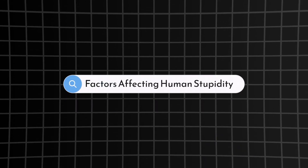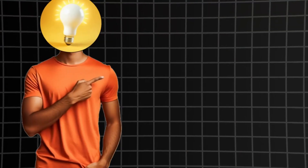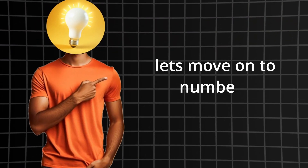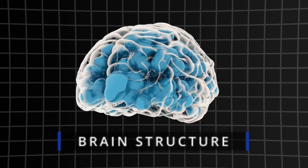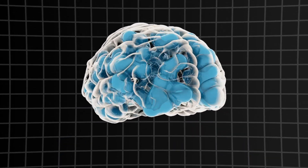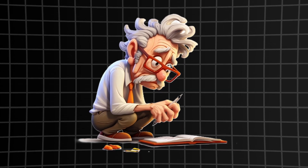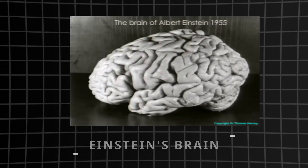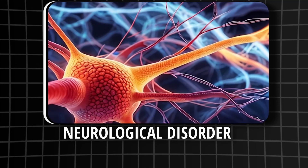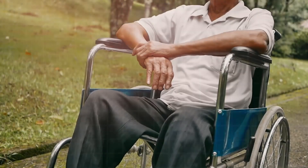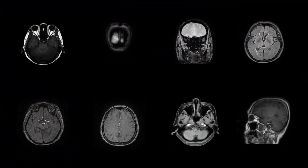Now let's move on to number two: brain structure. Different brain anatomy can lead to different IQs. You must have heard that Einstein's brain structure was different — that's why his brain is still preserved for study purposes. Number three: neurological disorders. Some conditions like dementia or traumatic brain injury can lead to lower IQ and reduced cognitive ability.